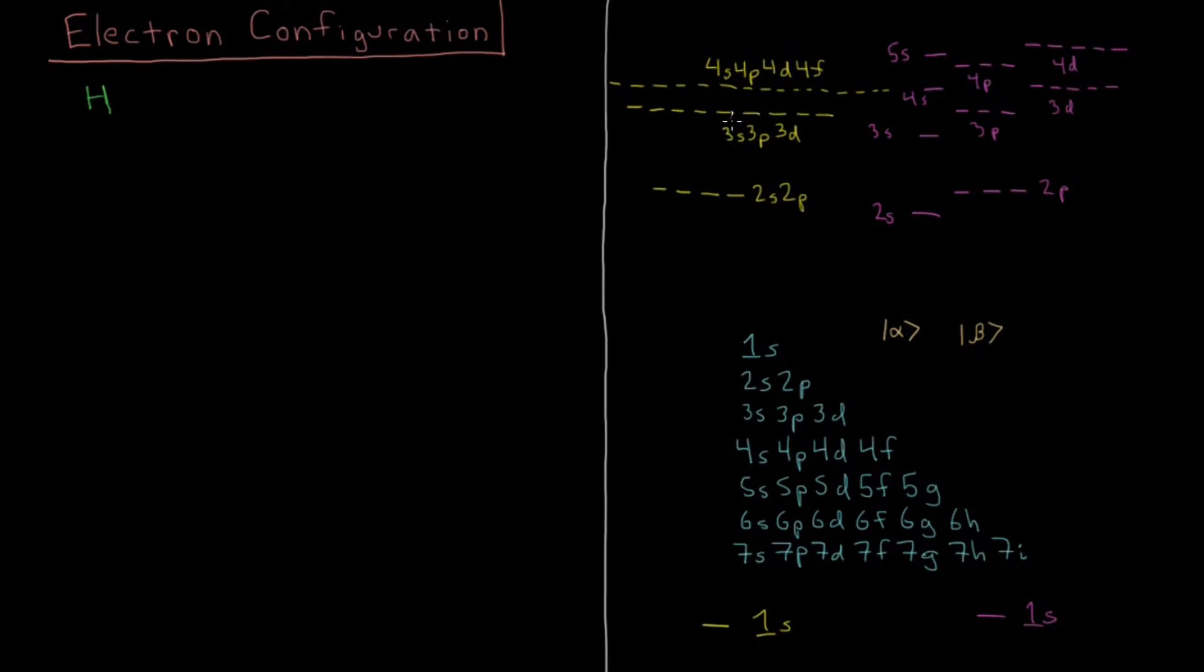The angular momentum being s, p, d, or f for l equals 0, 1, 2, 3, etc. Using the aufbau principle, we want to fill up the lowest energy orbitals first, so for hydrogen that meant the ground state was going to have 1s¹, or one electron in the 1s orbital.